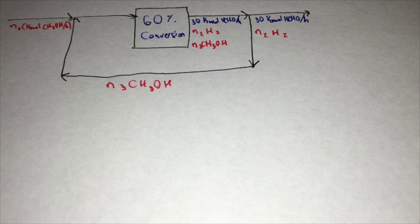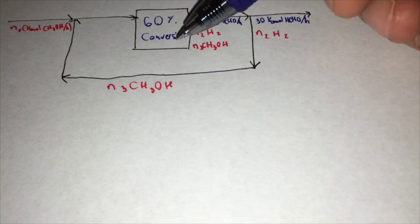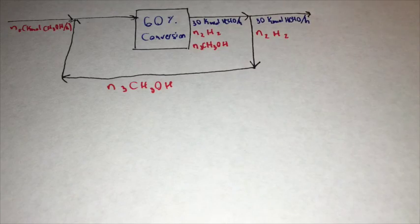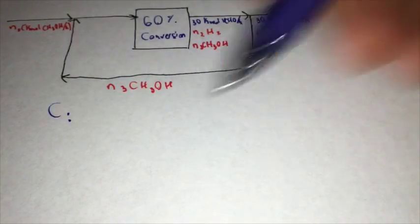Now that we have our flowchart, we can easily solve for N1 by doing an overall balance of carbon, an overall carbon balance. So C for the overall is going to be equal to